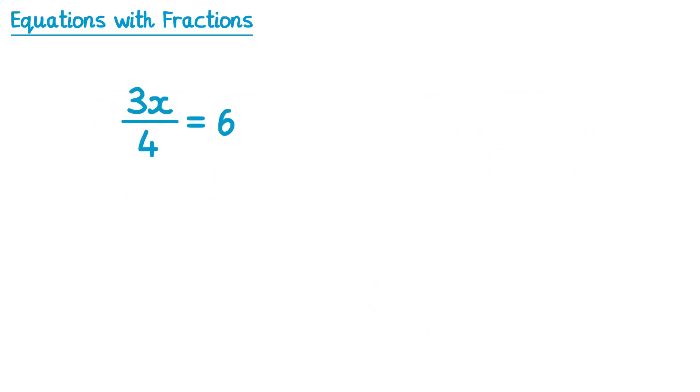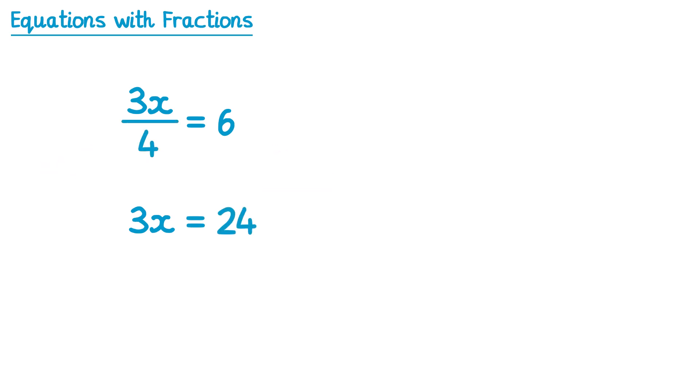On the left hand side of this equation we have a fraction. On the bottom of that fraction we have the number 4, which means we're doing 3x divided by 4. Since the inverse of dividing by 4 is multiplying by 4, the first step is to multiply by 4 on both sides. This cancels the divide by 4 on the left, leaving 3x. On the right hand side, 6 times 4 is 24.